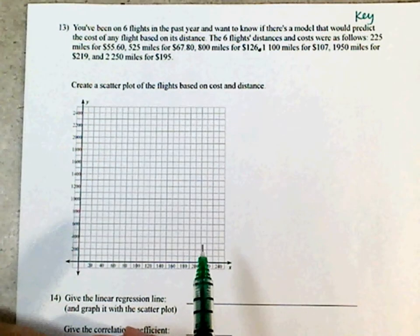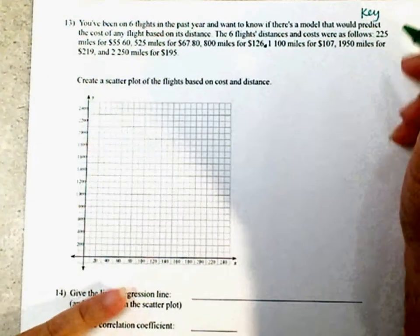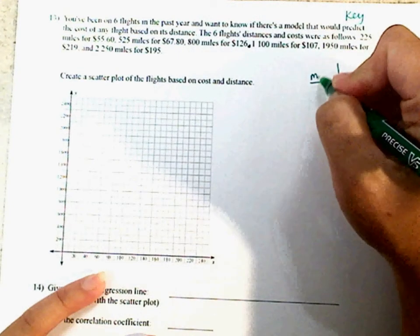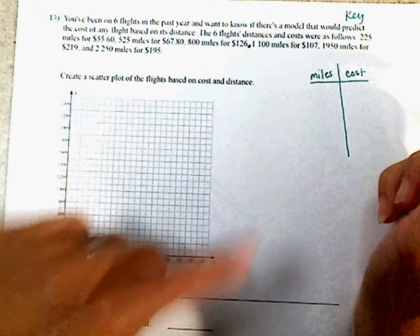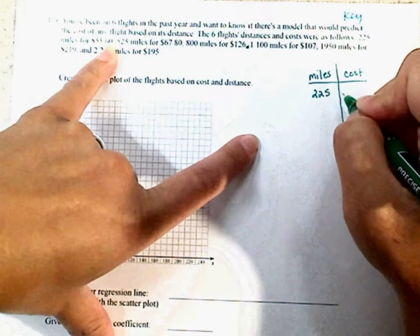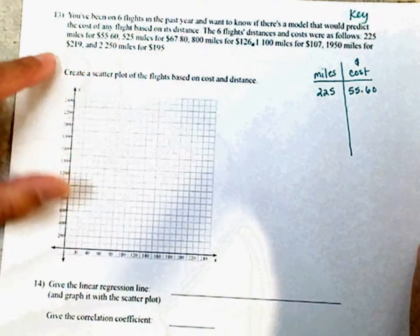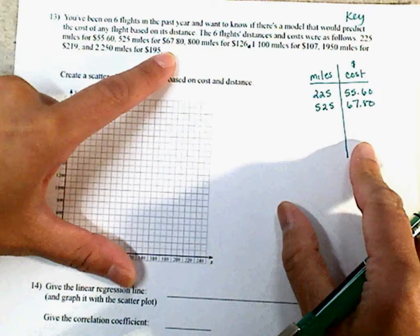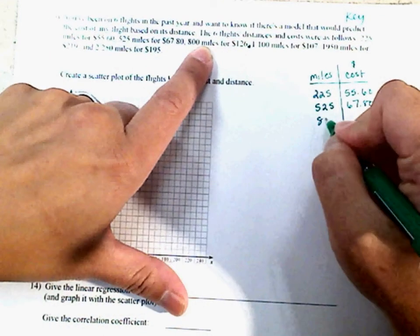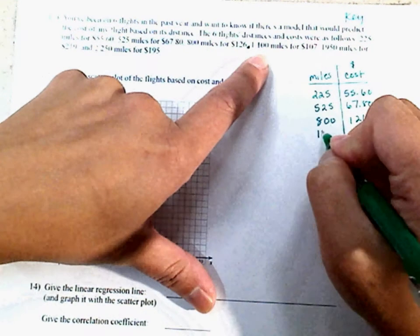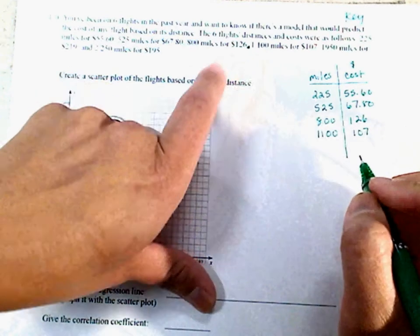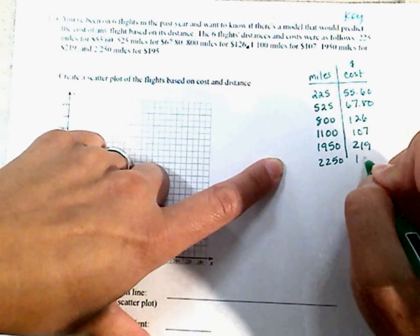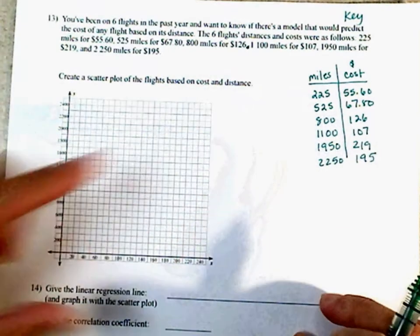First of all, it says create a scatter plot of the flight based on cost and distance. If you have a table, that might help you a lot. So you can always create a table using a T-chart. I'm going to put miles here and cost right here. 225 miles for $55.60, and that's going to be a dollar unit. 525 miles for $67.80. This will make it so much easier for you to type in your calculator.